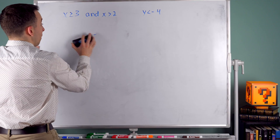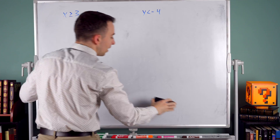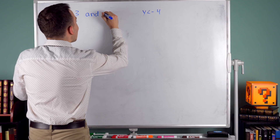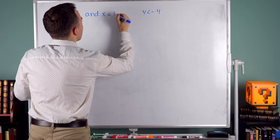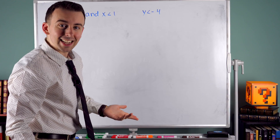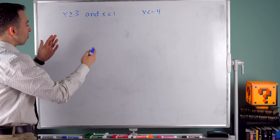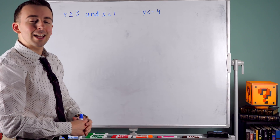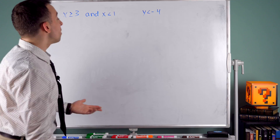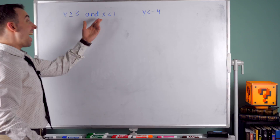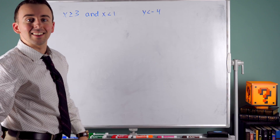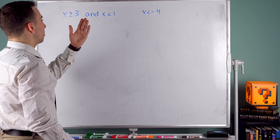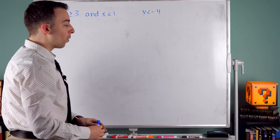Here's another test. We could write x is at least 3 and x is less than 1. Would that make sense to write? No — there is something inherently wrong with this, which is that there are no solutions. There's no number that's at least 3 and is less than 1. You can still write it, but there are no solutions to this compound inequality.